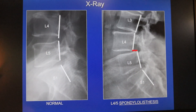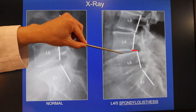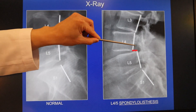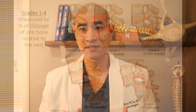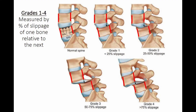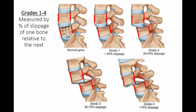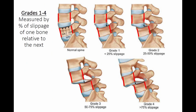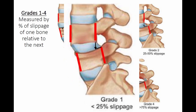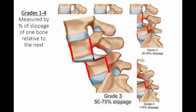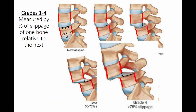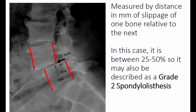Bones are named by number, for example L4 and L5. The disc is named by the bones that sandwich it — this is the L4-L5 disc because it's between the L4 and L5 bones, and that is the displacement that is measured. Spondylolisthesis is graded in two different ways. The first is a grading system from one through four, with four being the most severe. The system divides the bottom bone into quarters — 25%, 50%, and 75% — and we look at the amount of slippage of one bone relative to the next. For a grade one, slippage is less than 25%; grade two, between 25% and 50%; grade three, between 50% and 75%; and grade four, over 75%.